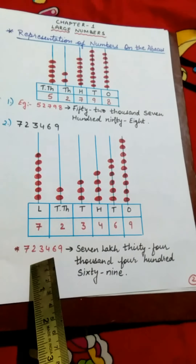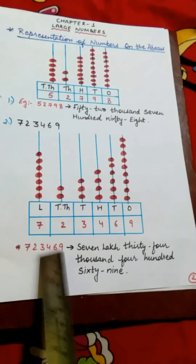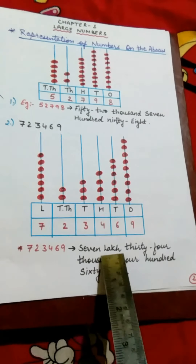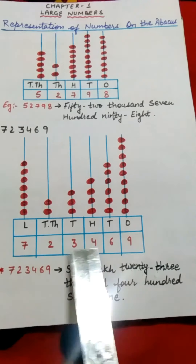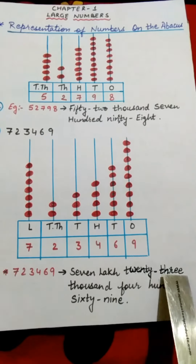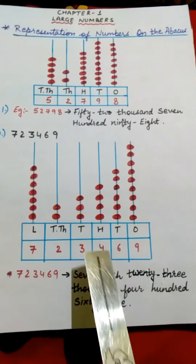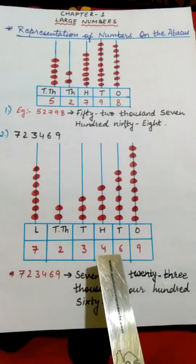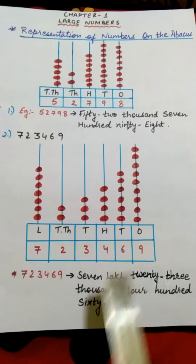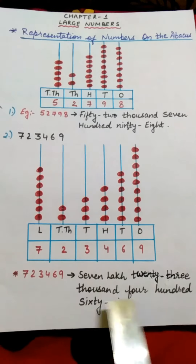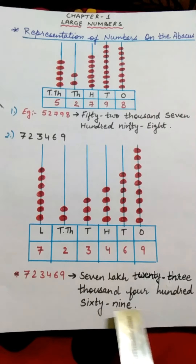If you want to write this number in words, you will see that 7 is in the Lakhs place, so it will be written as 7 Lakh. 23 is in the Ten Thousands and Thousands places, so we will write 23,000. 4 is in the 100s place, so we will write 400. 6 and 9 are in the 10s and 1s places, so we will write 69. So it will be written as 7 lakh 23,469.